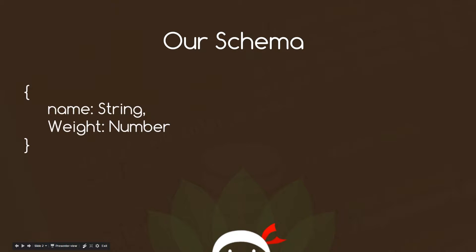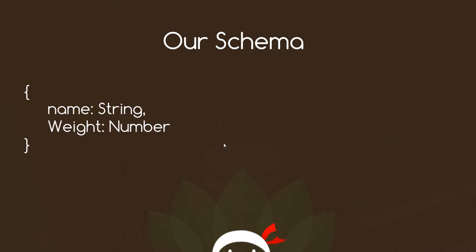First I want to cast our mind back to when we created the schema for our Mario character model. It looks something like this — we said it could expect a name which would be a string, and it could expect a weight which would be a number. So far we've used the name quite a lot but we've not used this weight property, and I want to focus on that weight property in this tutorial.